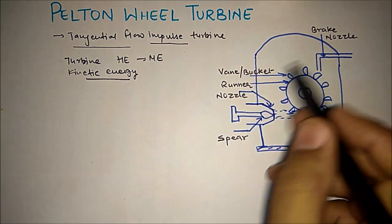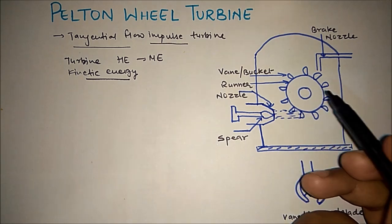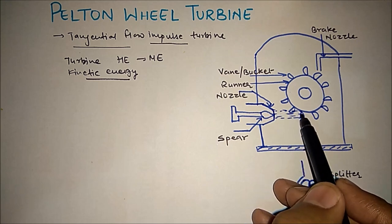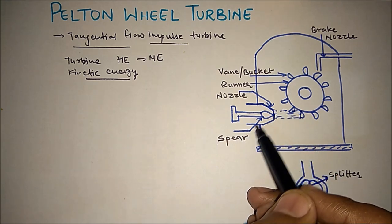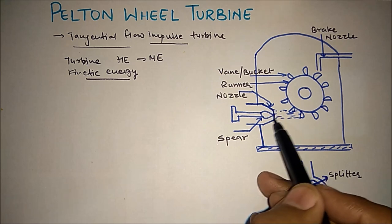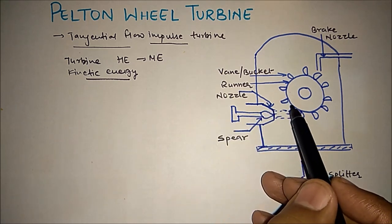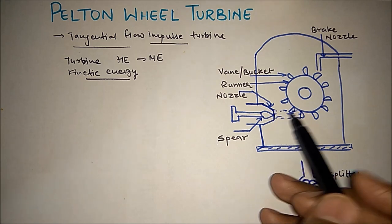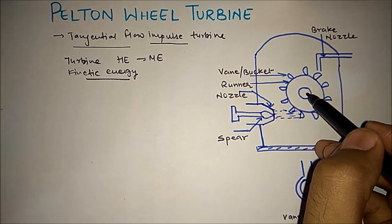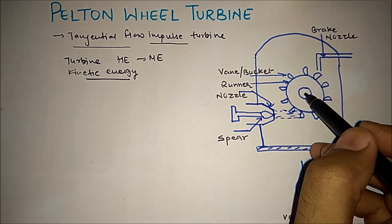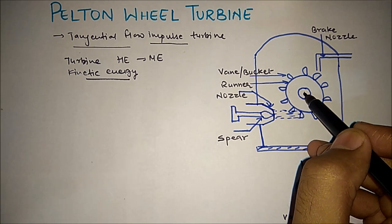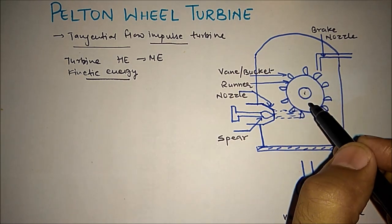Now this is the construction for Pelton wheel turbine. Let me explain the working. The water comes from the nozzle. The amount of water that will strike the blade is dependent on the spear. This spear controls the amount of water striking the blade. When this spear is pulled inward, the amount of water reduces. When it is pulled outward, the amount of water increases because of the opening. When the runner rotates due to the force exerted by the jet on the blade, the shaft connected to it rotates as well. The shaft is connected to a generator and ultimately it is used for the production of electricity. This is how the simple working of Pelton wheel turbine.